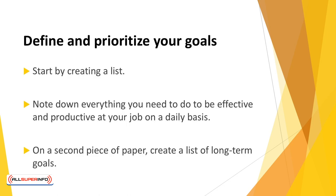Start by creating a list. Note down everything you need to do to be effective and productive at your job on a daily basis — that includes anything as mundane as filing away reports. One of the things this list will tell you is how much time you spend in crisis management mode, dealing with the problems of others rather than time management mode.